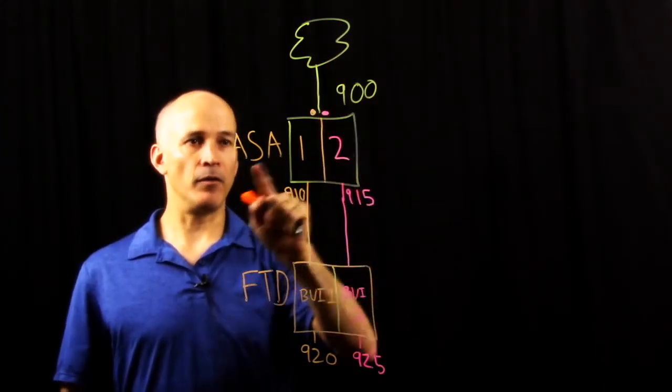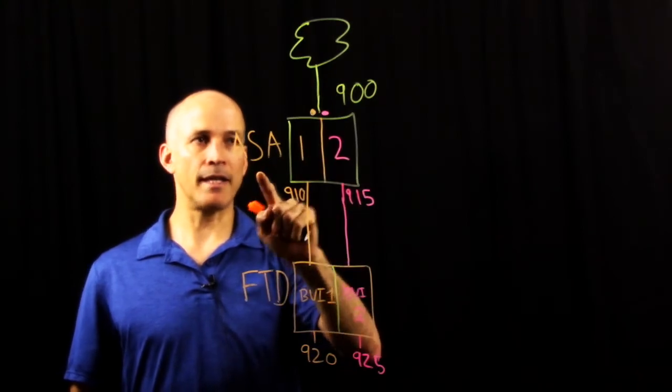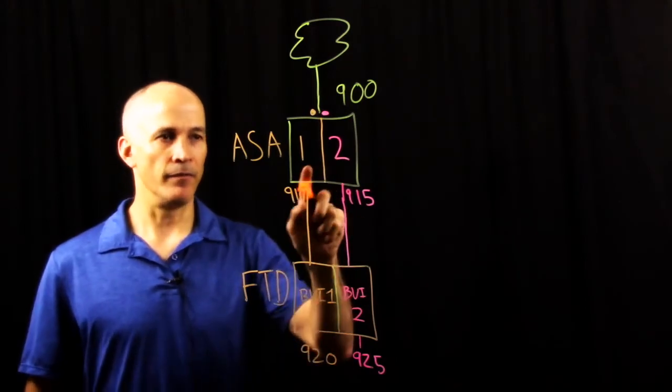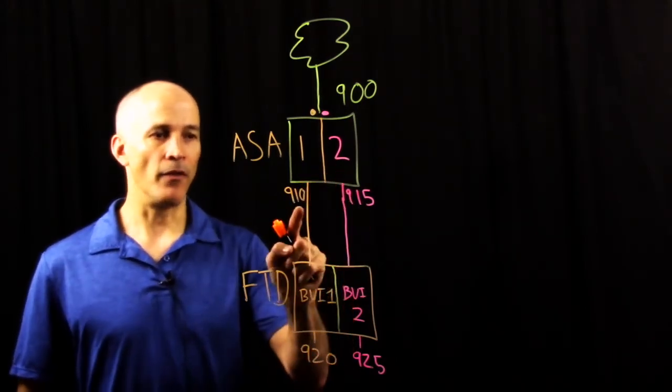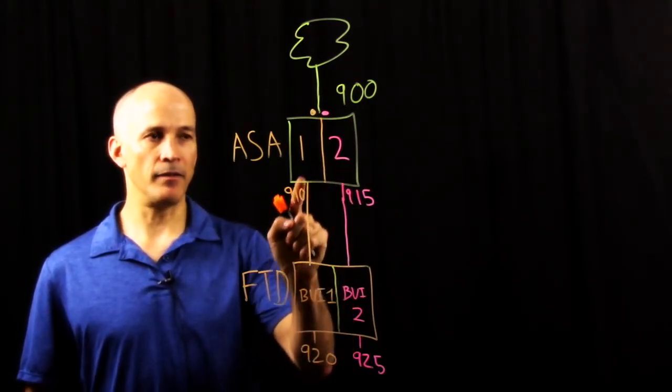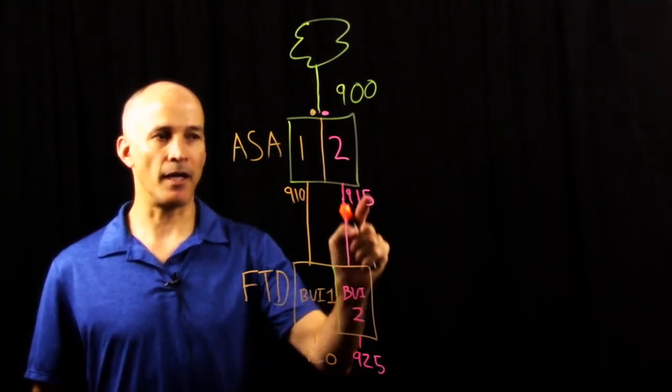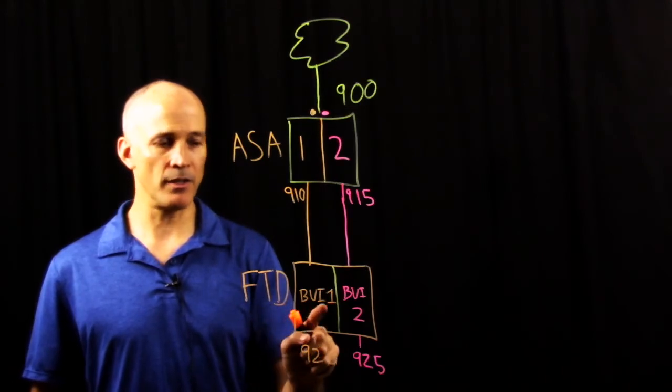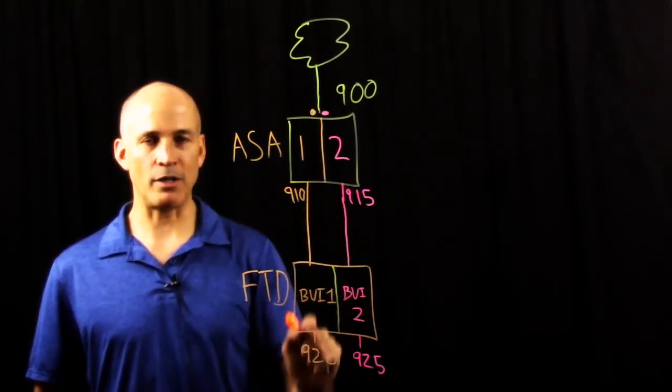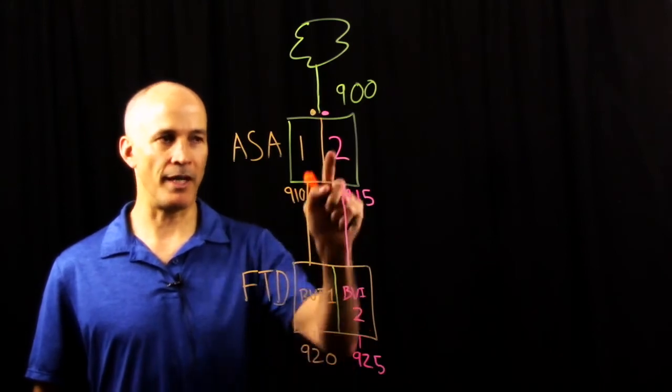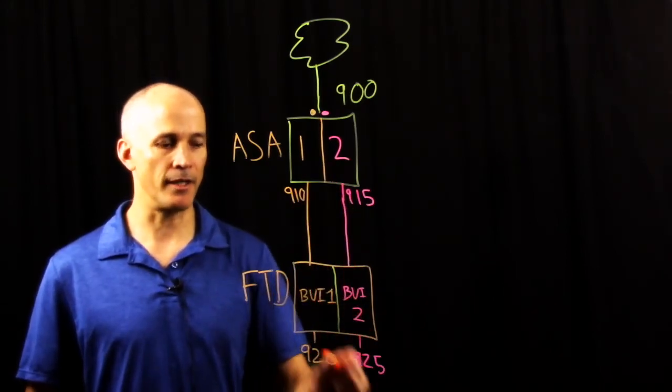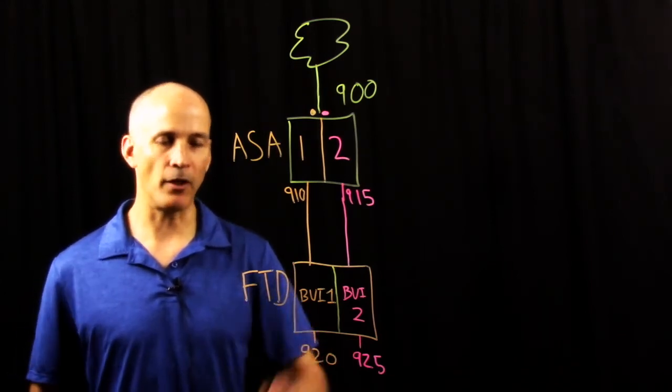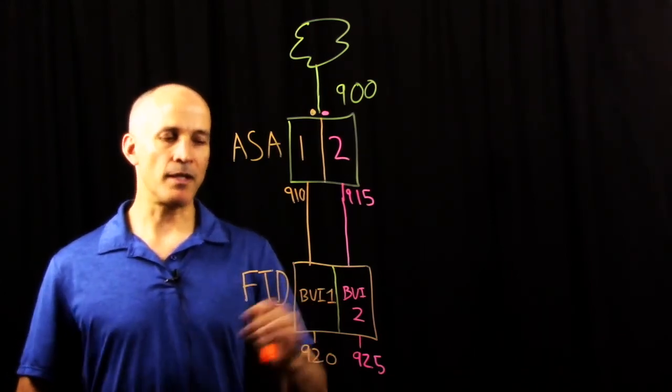Packets come in from the internet into your ASA cluster on VLAN 900 using one of two different contexts, context one or context two. They'll exit the ASA in context one on 910 and context two on 915. They'll enter your firepower threat defense cluster, either on BVI one, which matches up to context one, or BVI two, which matches up to context two. They'll exit the firepower threat defense cluster on VLANs 920 or 925.